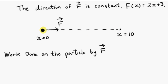The particle moves in a straight line from 0 to 10, and we want the work done on the particle by vector F. Let's suppose that we wanted to get the force on the particle at x equals 6.